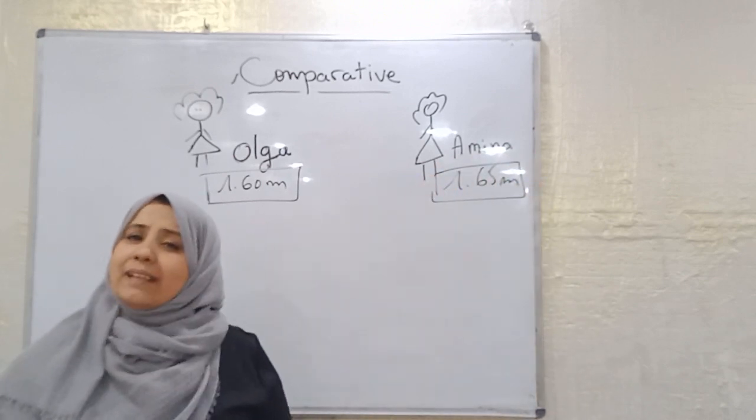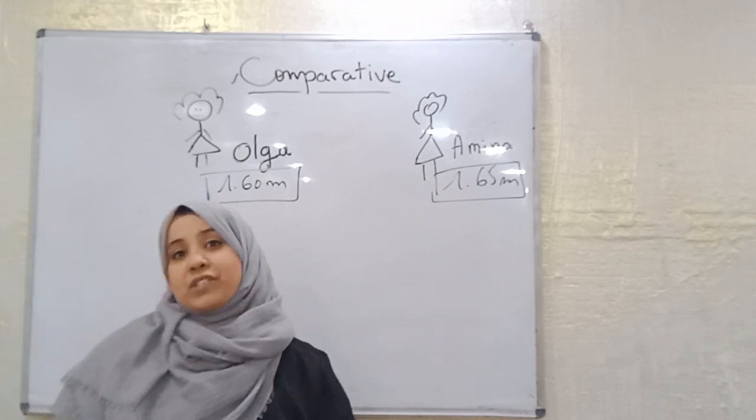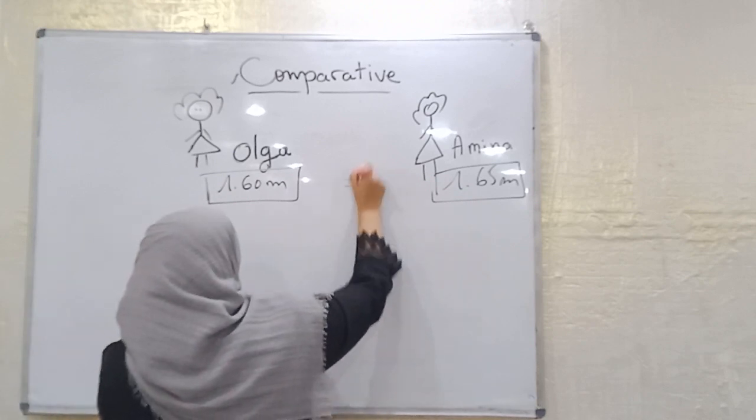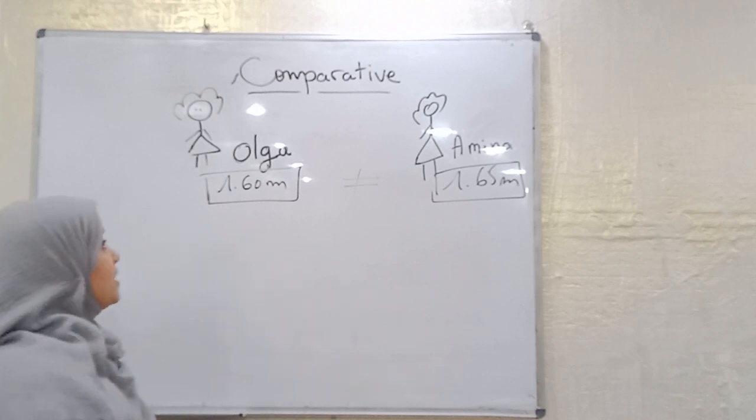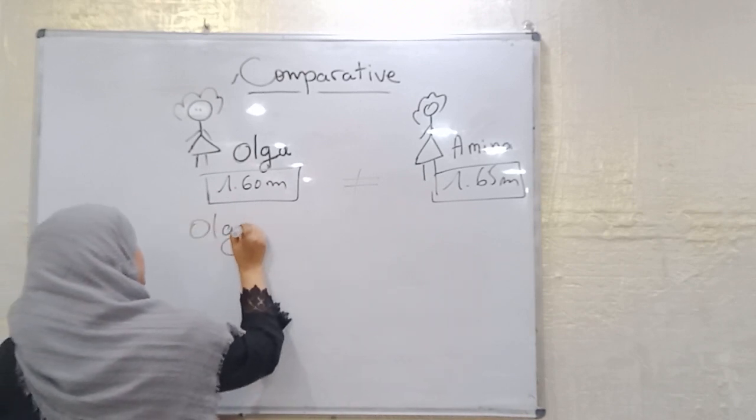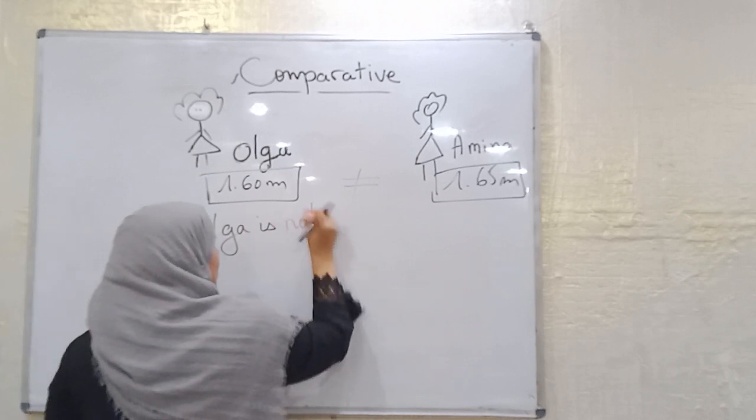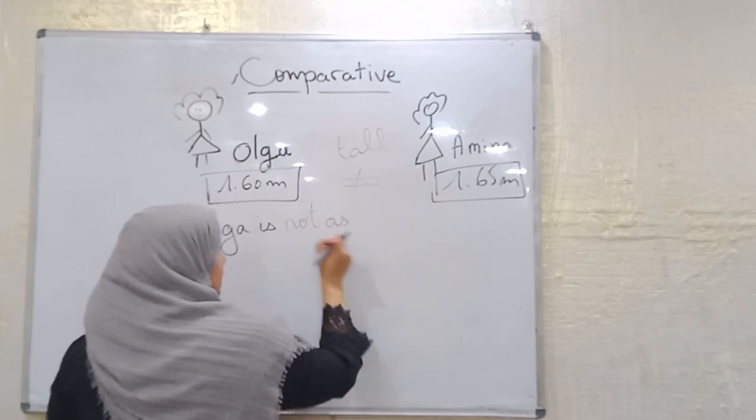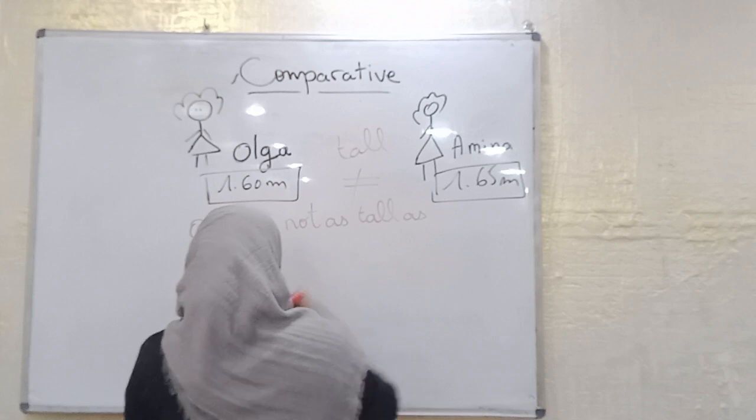Do you think that Olga and Amina have the same height? No, there is no equality here. They don't have the same height but they are unequal here. So here in this case we can say, Olga is not as, we keep using the adjective tall, is not as tall as Amina.